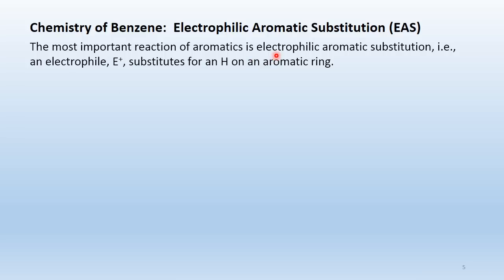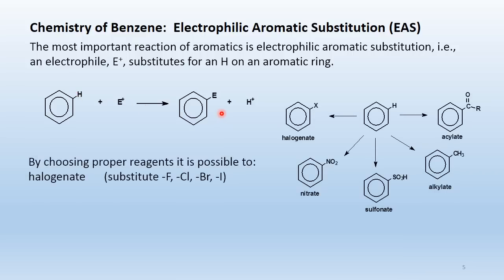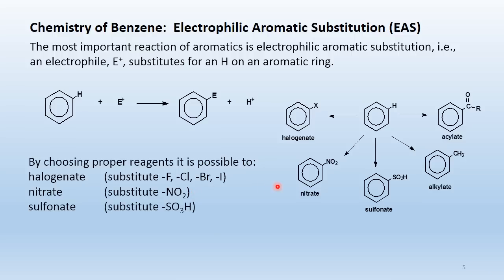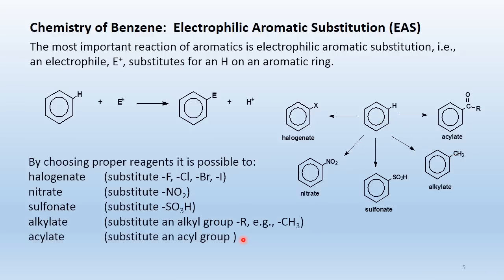The most important reactions of aromatics are electrophilic aromatic substitution (EAS) reactions. An electrophile — an electron acceptor — substitutes or replaces a hydrogen on an aromatic ring. By choosing proper reagents, it is possible to halogenate, nitrate, sulfonate, alkylate, or acylate an aromatic ring, replacing hydrogen with a halogen, nitro group, sulfonic acid group, alkyl group, or acyl group respectively.